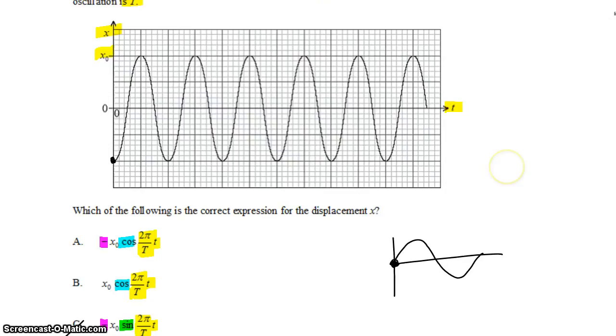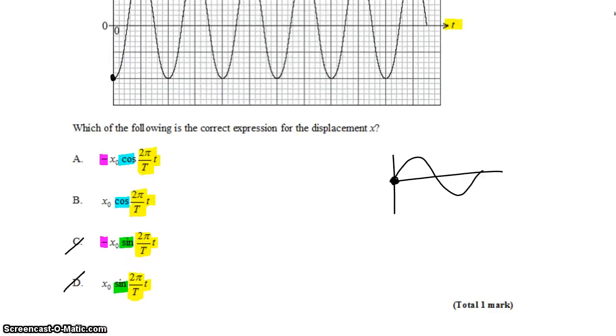I need to remember that cosine graphs start at a maximum, not a minimum. So this graph is actually an inverted cosine graph, and that means the answer is A.